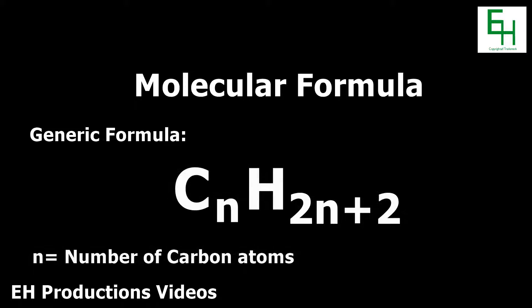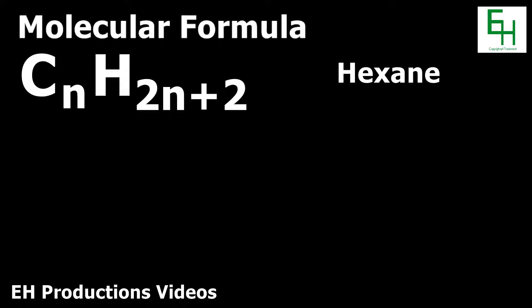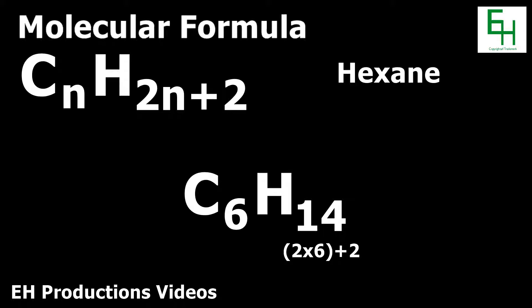Now we're going to find the molecular formula. The generic way to express the molecular formula for these alkanes would be CnH2n plus two. Let's use this to write the formula for hexane. C would be six, because hexane contains six carbon atoms, and H would be fourteen, because two times six plus two would be fourteen. So C6H14 would be the molecular formula for hexane.